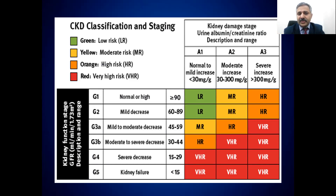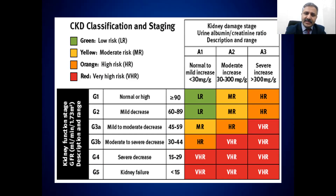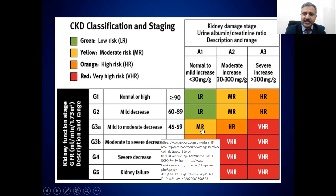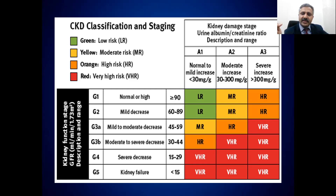With the newer classification, albuminuria has also been added. If someone has no albuminuria — less than 30 mg/g — that is A1. Microalbuminuria or moderately increased albuminuria, 30 to 300 mg/g, is A2. More than 300 mg/g is macroalbuminuria, or severely increased albuminuria. If someone has stage 3 CKD but significant albuminuria, their risk of progression of diabetic nephropathy is very high — placing them in a very high-risk category.